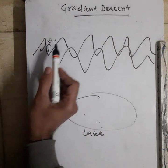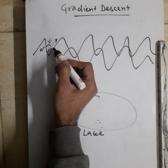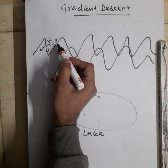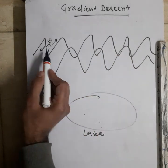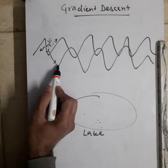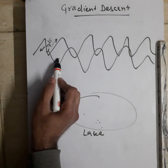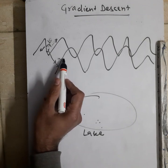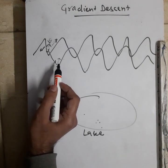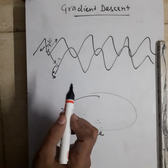Let's say he starts from here and after taking a few steps he goes in one direction, then realizes he has started ascending again — so that might not be the right direction. He changes his path, continues further, and then realizes again that he has started ascending. He stops there, keeps changing direction, and keeps moving in a descending direction.